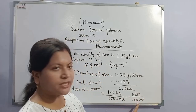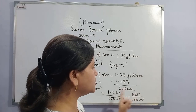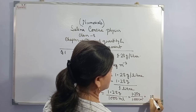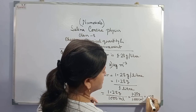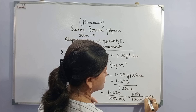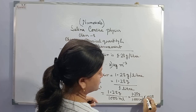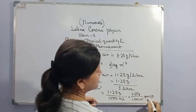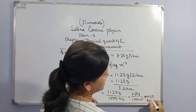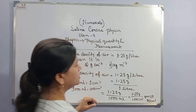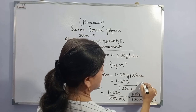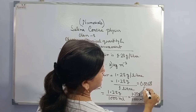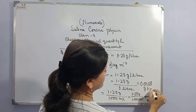Now there are 3 zeros, that's why the decimal will be shifted after 3 digits. So the digits are 2, 8, 1, 2, 0 — then put the decimal here. The unit will be gram per cubic centimetre. So our answer is 0.00128 gram per cubic centimetre.